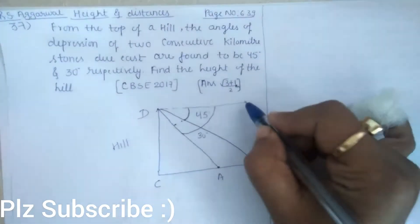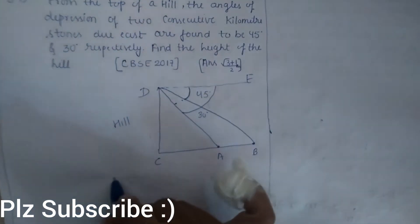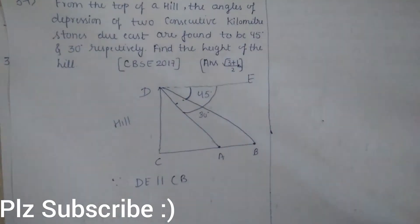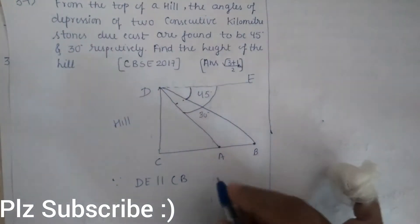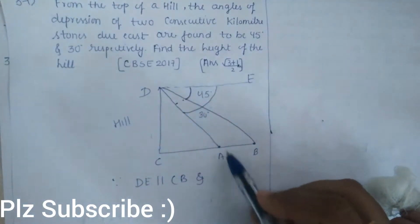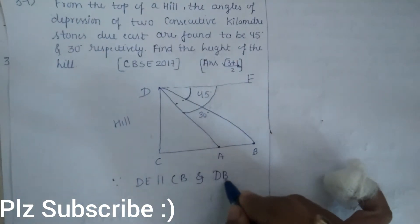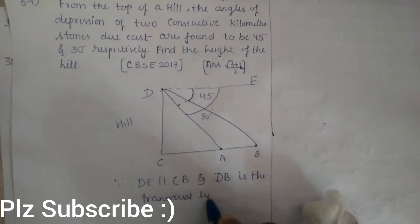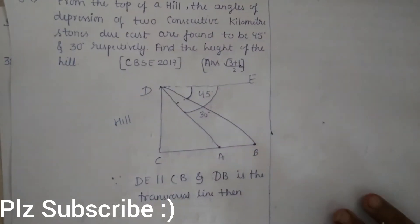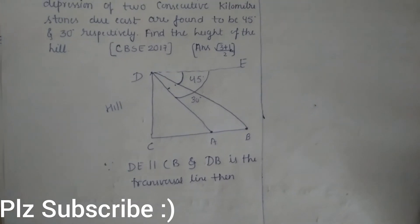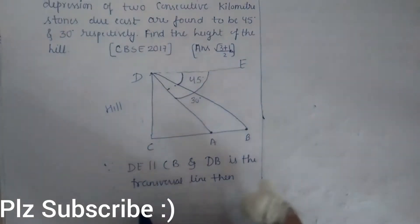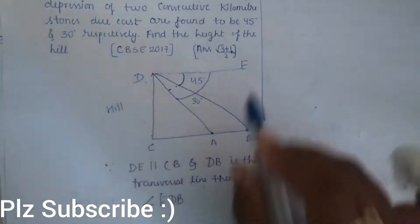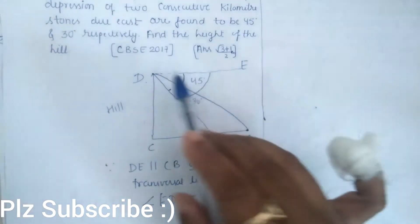Suppose this point is D and this is D and E. Since DE is parallel to CB and DA or DB is the transversal line, by the concept of alternate interior angles the angles will be equal. Angle EDB is equal to angle DBC.